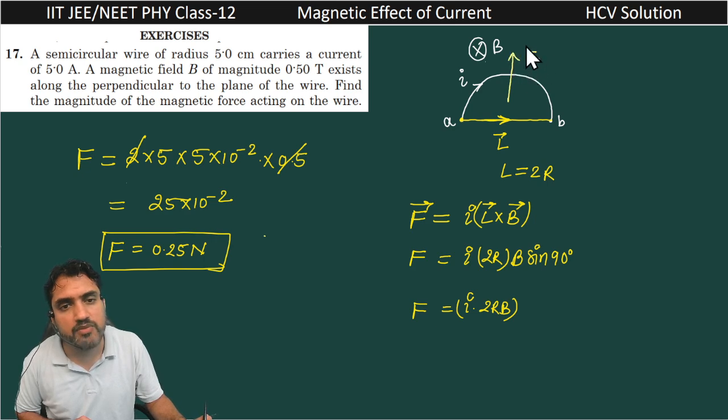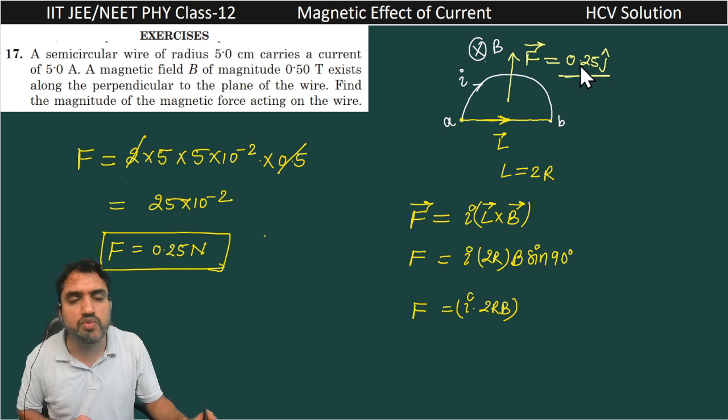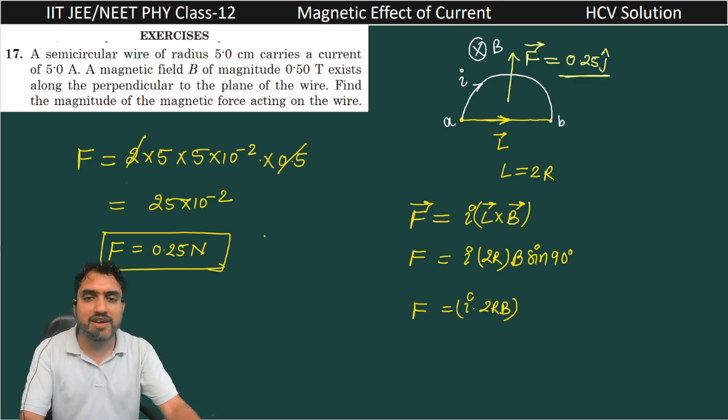The force on this wire will be vertical upward direction. This F is equal to 0.25, and you can write this vertical upward direction as j, so 0.25 j Newton. Thank you very much.